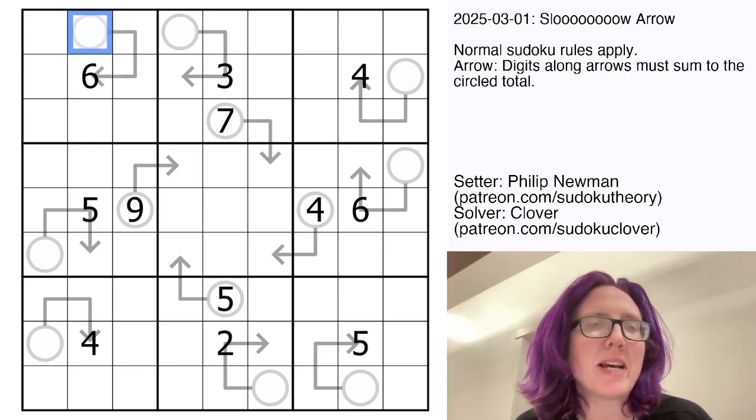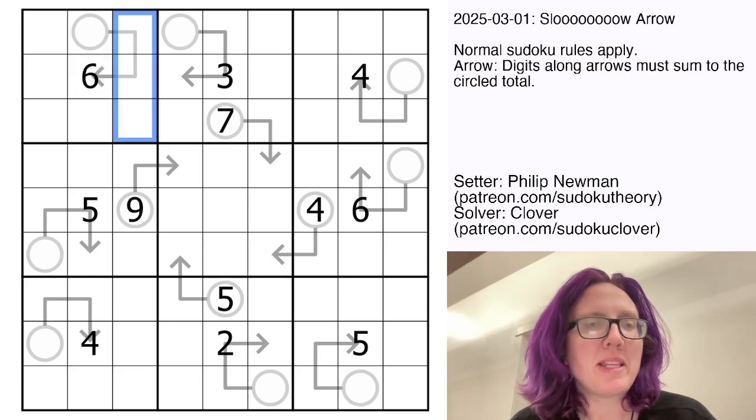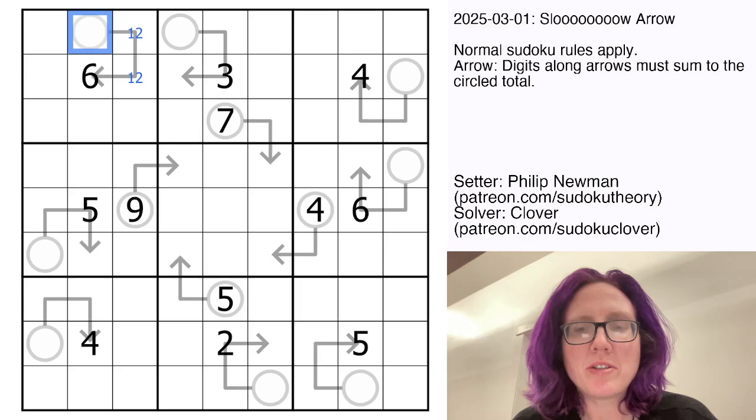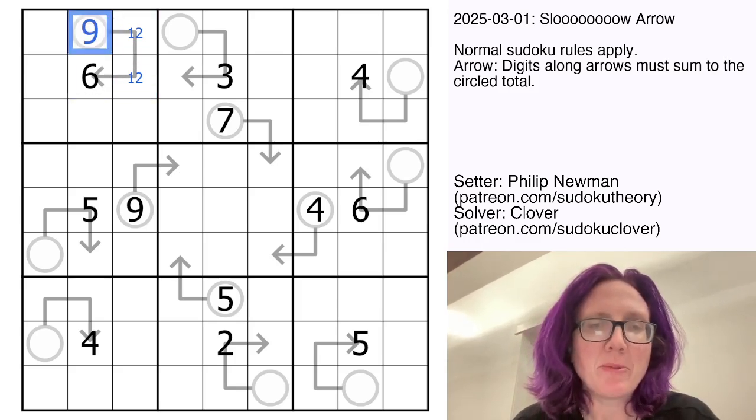For example, these three digits have to sum to this digit. So because this is a six, if we make these two as low as possible, one and two, we actually end up getting the biggest possible digit that we can put in a sudoku, which is nine.